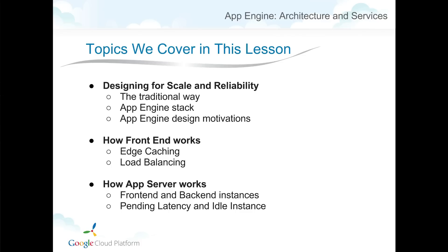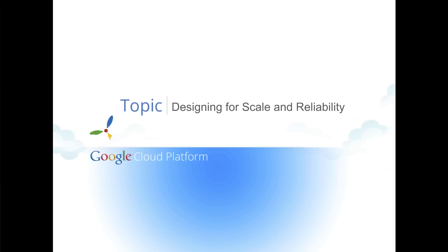In this lesson, I'd like to discuss three things. One is the scalability and reliability provided by Google App Engine, and I'd like to compare that between the traditional way of designing web applications and the App Engine design. I'd also like to discuss two major components running inside the App Engine stack: the front end and how it works, and the app server and how it works. The first topic is designing for scale and reliability.